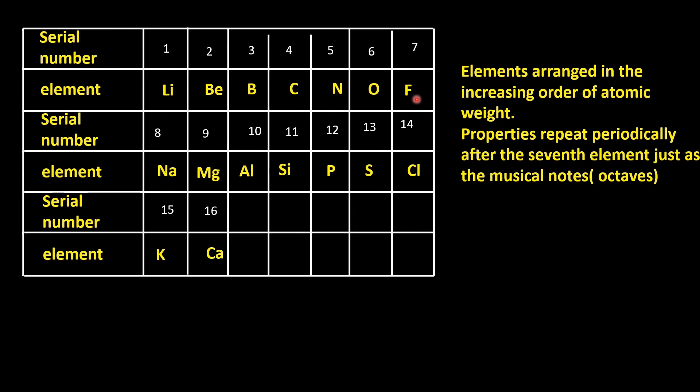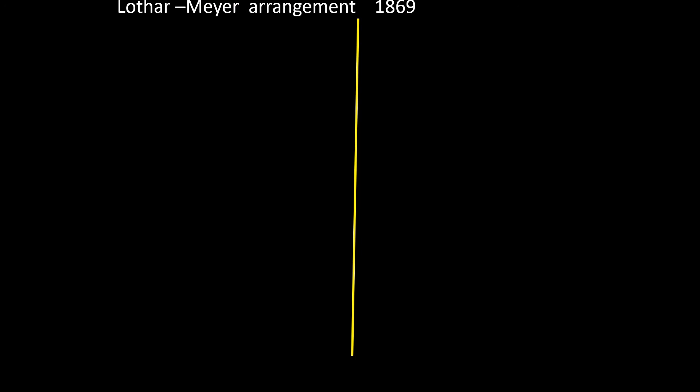After fluorine, sodium is the 8th element. It is similar to lithium. And if you are starting from beryllium, it is aluminum which is the 8th element. Aluminum resembles boron, but this method of classification could be applied to elements up to calcium only. So this method of classification also was insufficient.